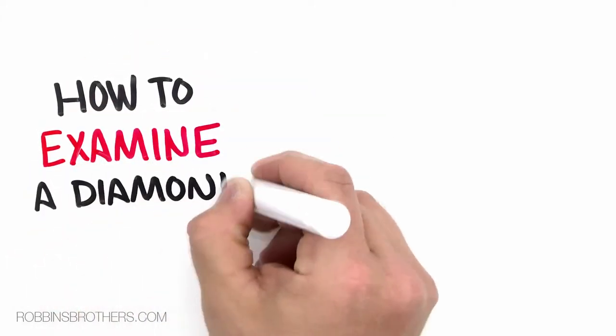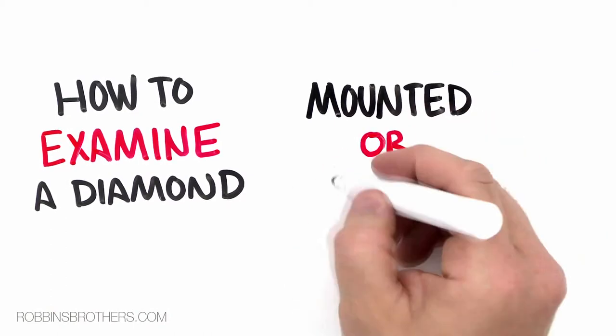How to examine a diamond. Does it make a difference if I examine a diamond mounted or unmounted?